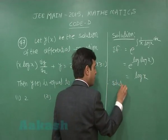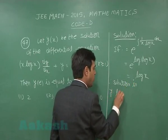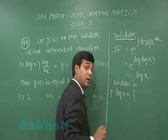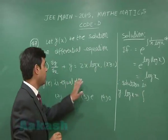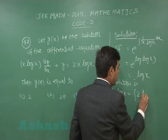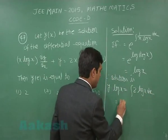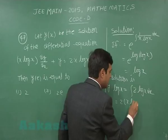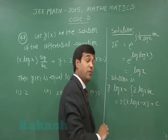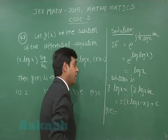Therefore, the solution is y·log(x) equals the integral — having divided the equation by x·log(x), we have 2 on the right-hand side — that is the integral of 2·log(x) dx, which gives 2(x·log(x) − x) + c, where c is the constant of integration.